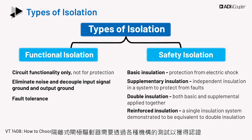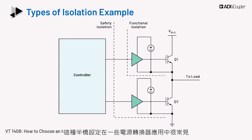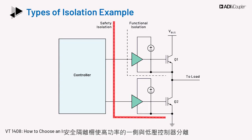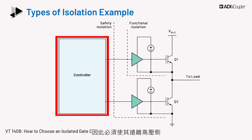The isolated gate drivers need to pass tests from various agencies to be certified. Now let's look at an example of how isolation is applied to a design. The block diagram shows where various types of isolation are employed. This half bridge configuration is common in several power converter applications. The safety isolation barrier keeps the high power side separated from the low voltage controller. The controller side, or low voltage side, may have sensitive equipment or an operator handling it.